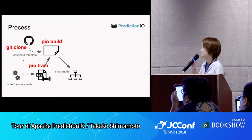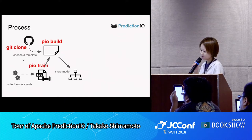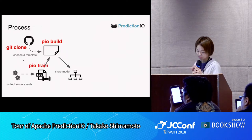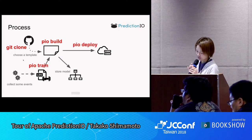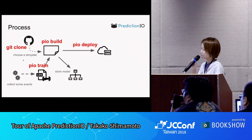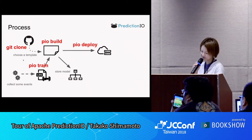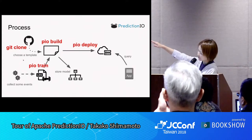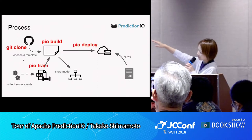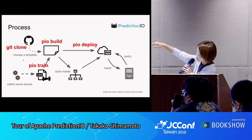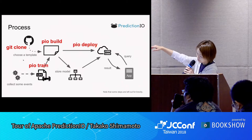The model will automatically be stored after training by PredictionIO. And finally, deploy it as a service. So the application sends a request, a query, and then it will return a prediction using its model.